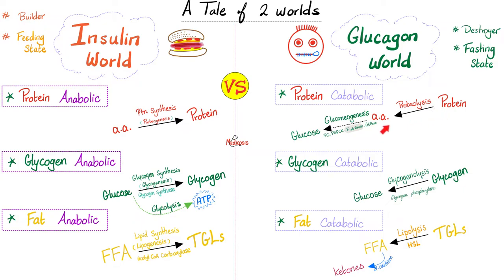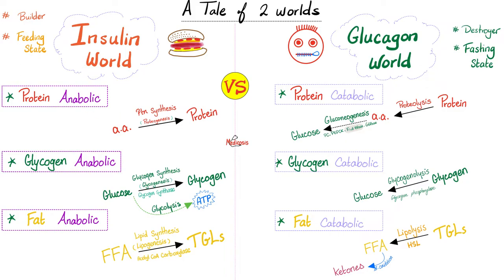So you break down proteins into amino acids, you break down glycogen into glucose, and you break down triglycerides into free fatty acids. And when you do this, you release ketone bodies. Translation: you only see ketone bodies in the glucagon land, not in the insulin land.